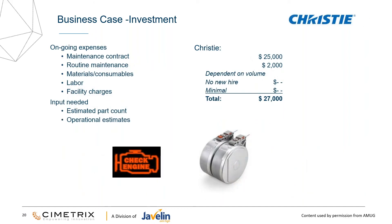Then we move forward to what about the ongoing costs. There was a maintenance contract — most additive machines have the option of putting on a maintenance contract, or maybe your company just wants to pay per material use. You need to account for that in your numbers. Think about routine maintenance costs. Then typically you would also consider your materials, labor, and facilities. In this example I left that off because it's really dependent on the materials and processing you're doing — but you want to account for those numbers in your overall cost.